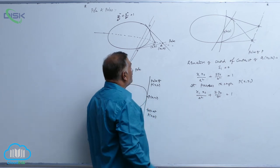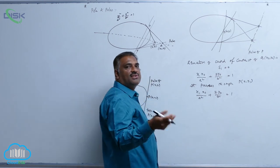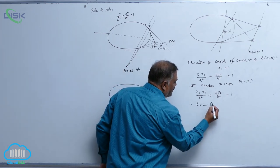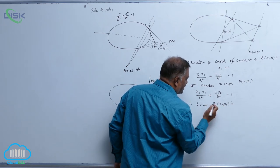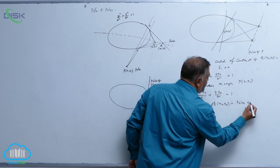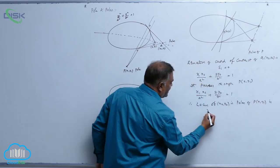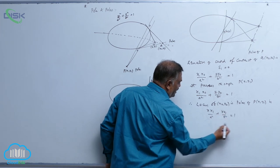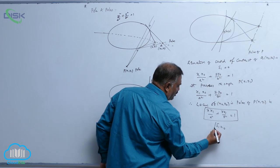Now we require locus of this point, replace x0 y0 by general coordinates. Therefore locus of (x0, y0) is nothing but polar of P(x1, y1) is x x1 by a square plus y y1 by b square equal to 1. This is nothing but S1 equal to 0.